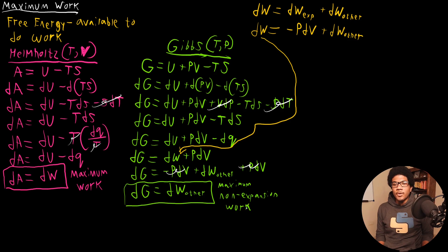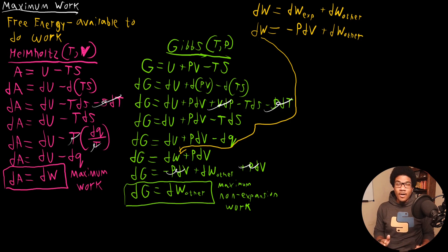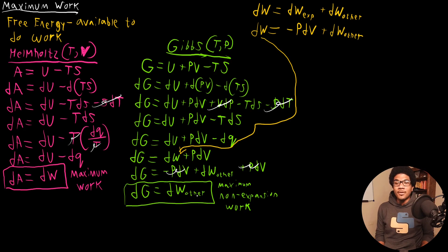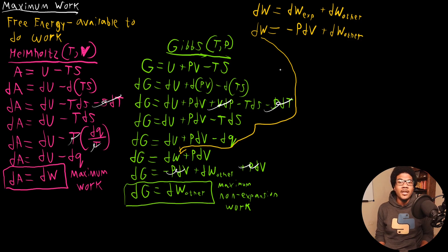So this gives a little more insight into what the free energy terms are. The Helmholtz free energy gives you the maximum work from all contributions — expansion and all other contributions. The Gibbs free energy gives you the maximum non-expansion work. So if there's some electrical work or any other type of work going on in your system outside of a gas expansion, the Gibbs free energy is the maximum non-expansion work.